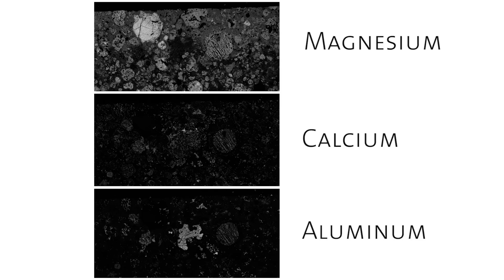We can do point analyses at a micron-sized spot in a mineral sample, but we can also create entire maps of areas in chondrites or other rock samples. Here are three different element maps: magnesium on top, calcium in the middle, and aluminum on the bottom. Wherever you see brighter white, that's where that element is in higher concentration. For example, a very intensely magnesium-rich region on the top is where a particularly large chondrule is located. However, single element maps aren't super useful for differentiating the different types of components inside chondrites.